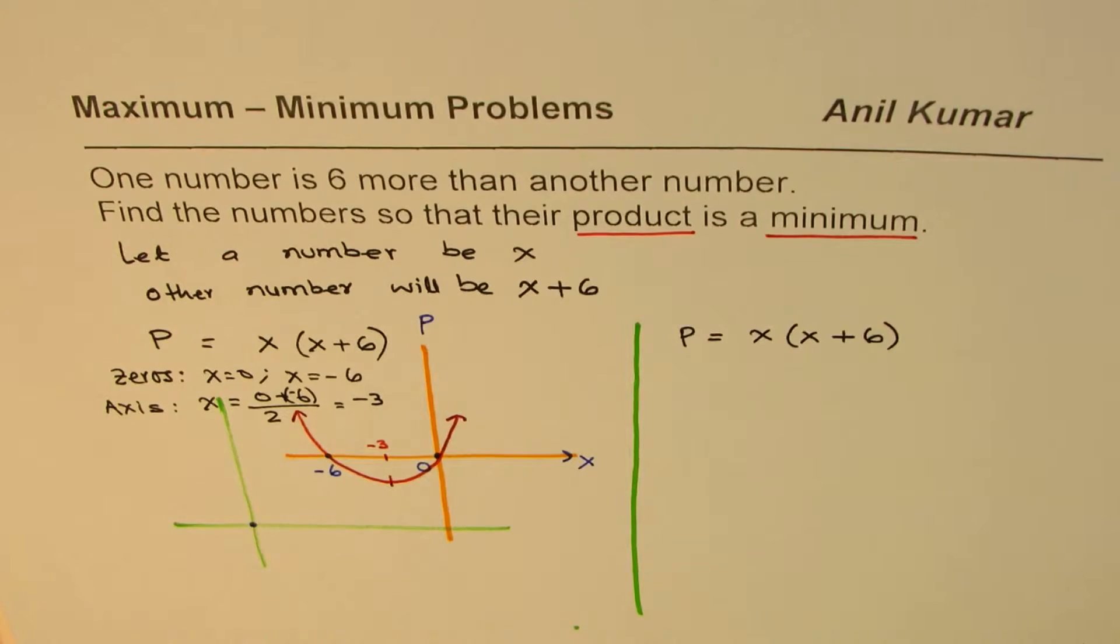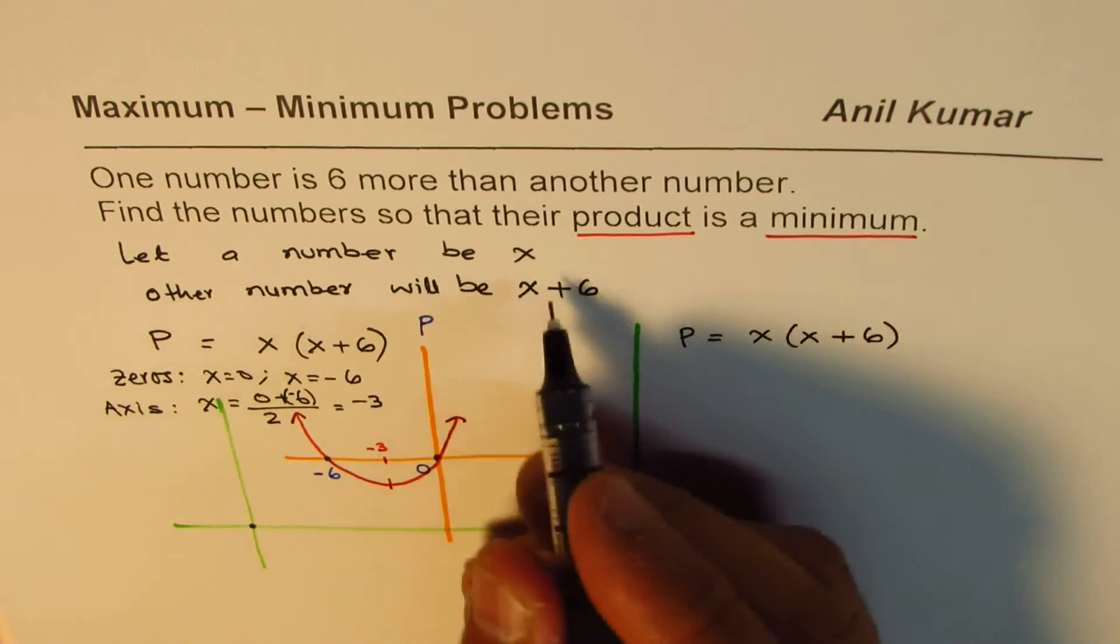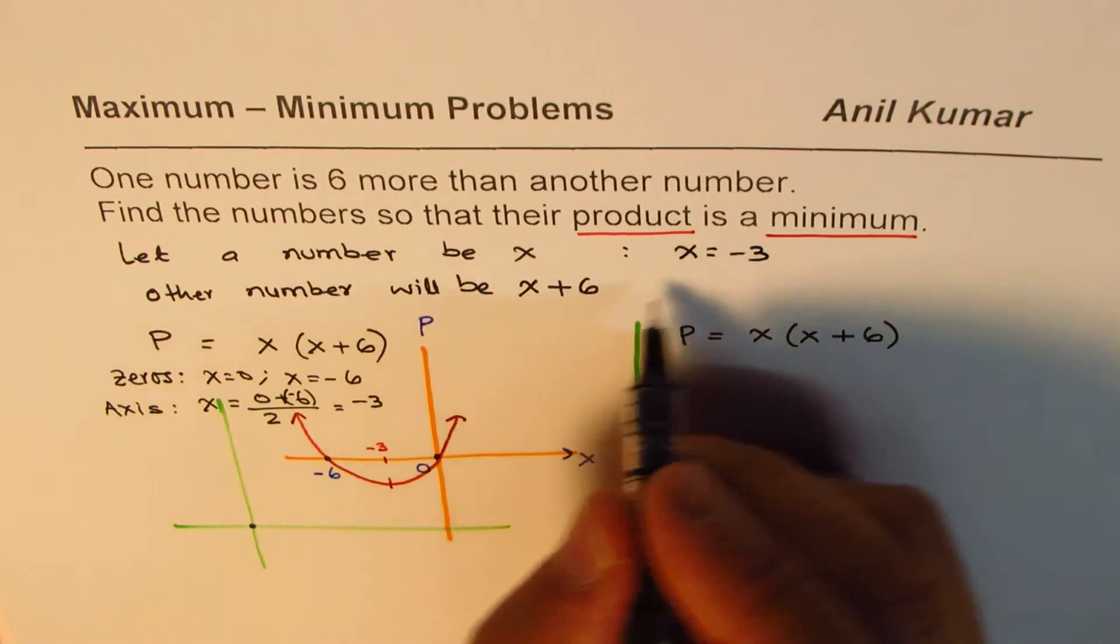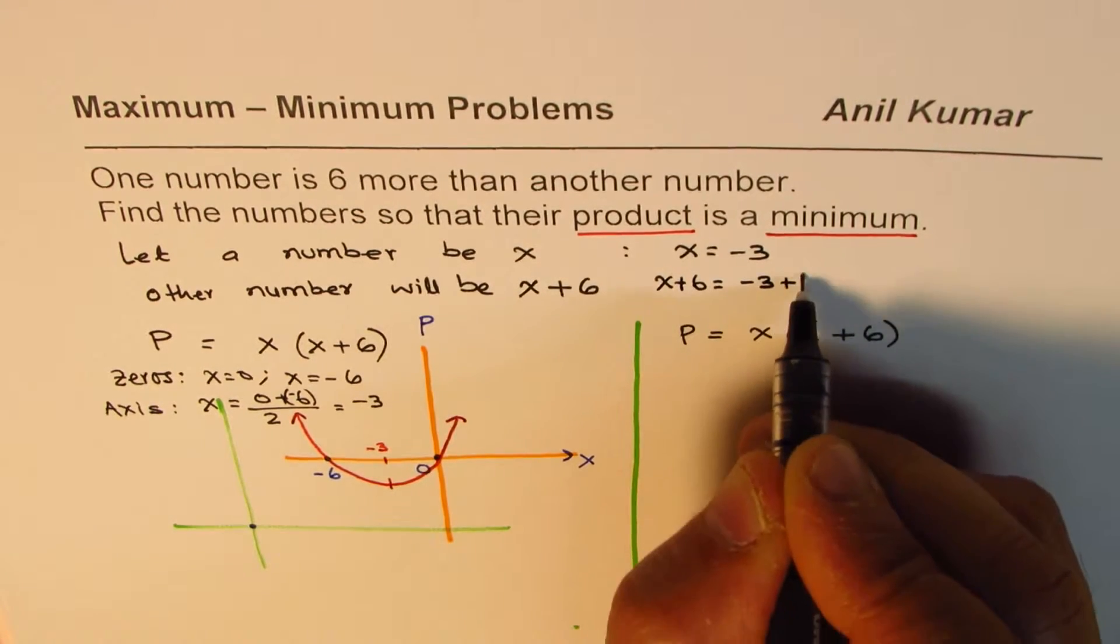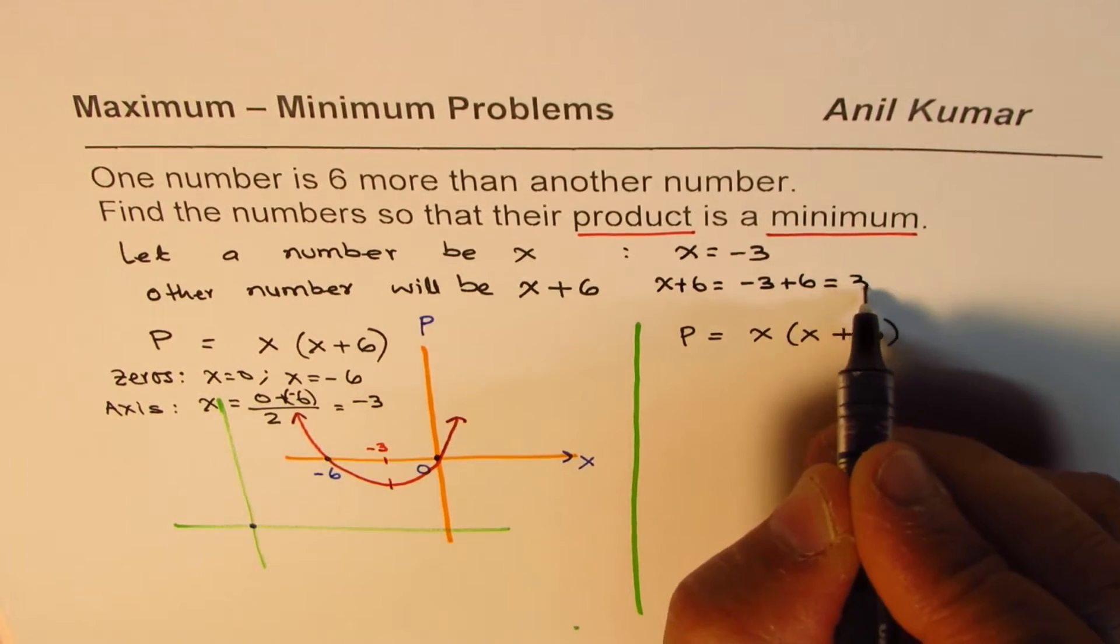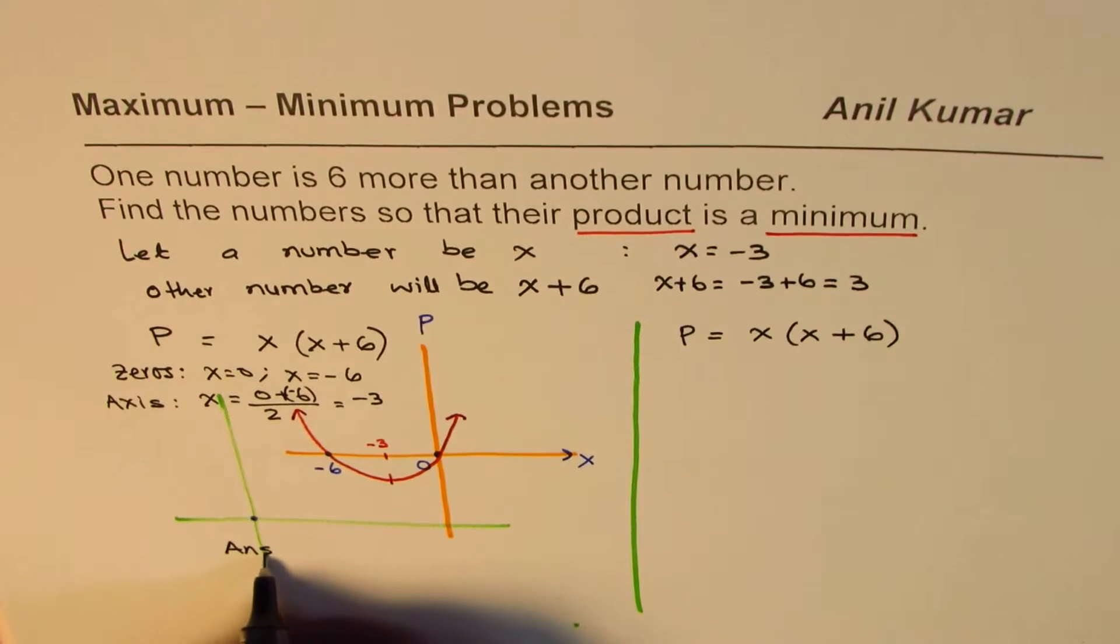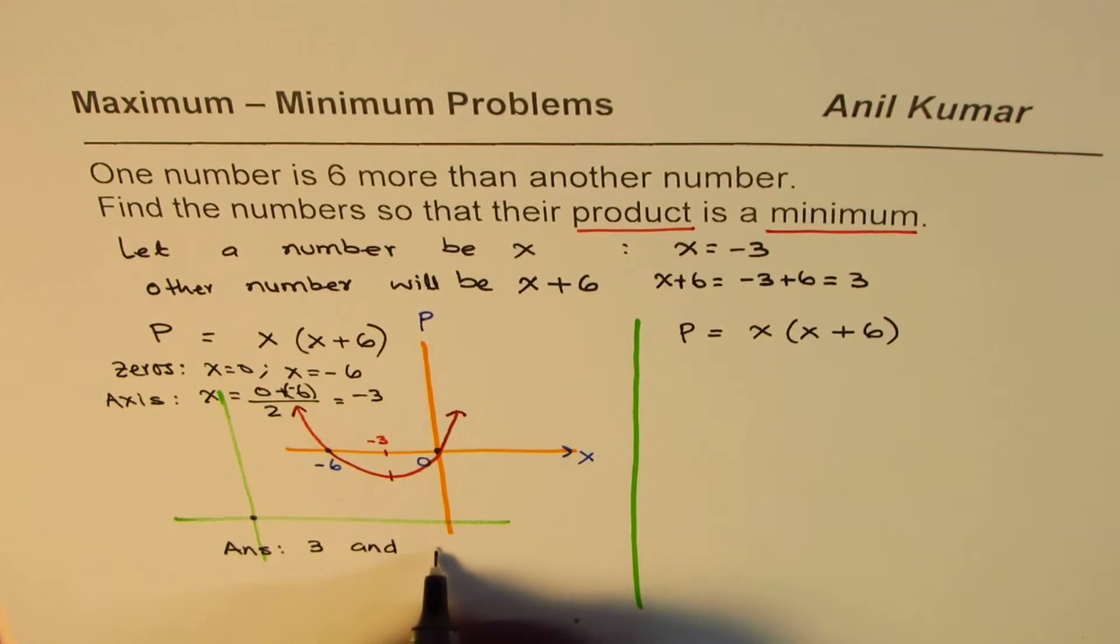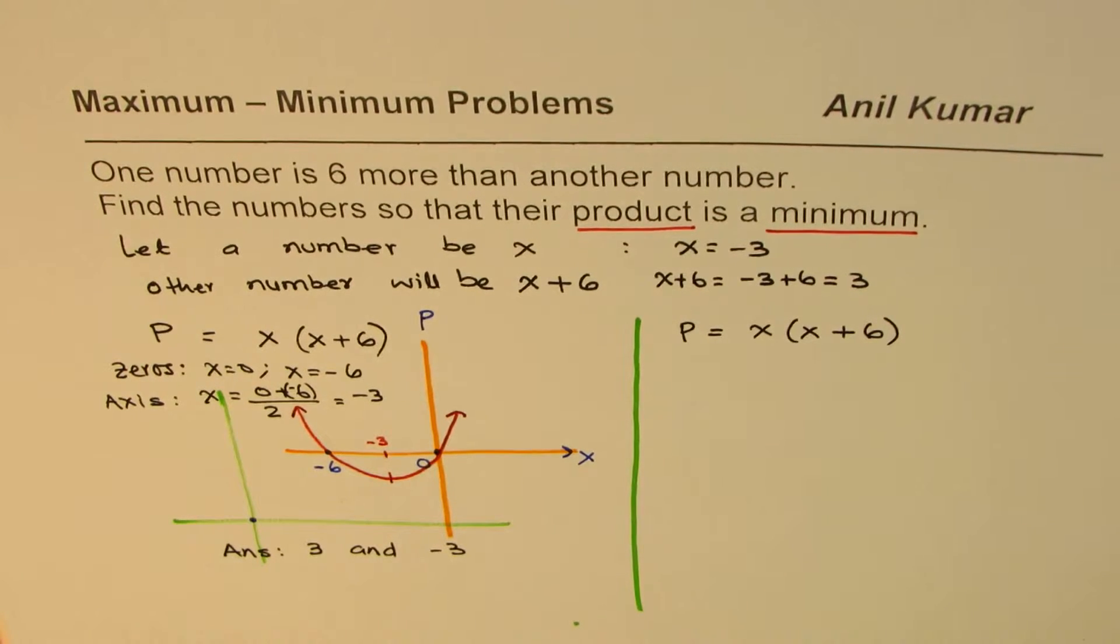Do you see that? So one number is X, the other one is what? We found that X equals to minus three. So X plus six should be minus three plus six, which is plus three. So we get two numbers. Great. So our answer in this case is the two numbers are three and minus three. Do you get an idea? So without any calculations, just by making a graph, you can get the solution.